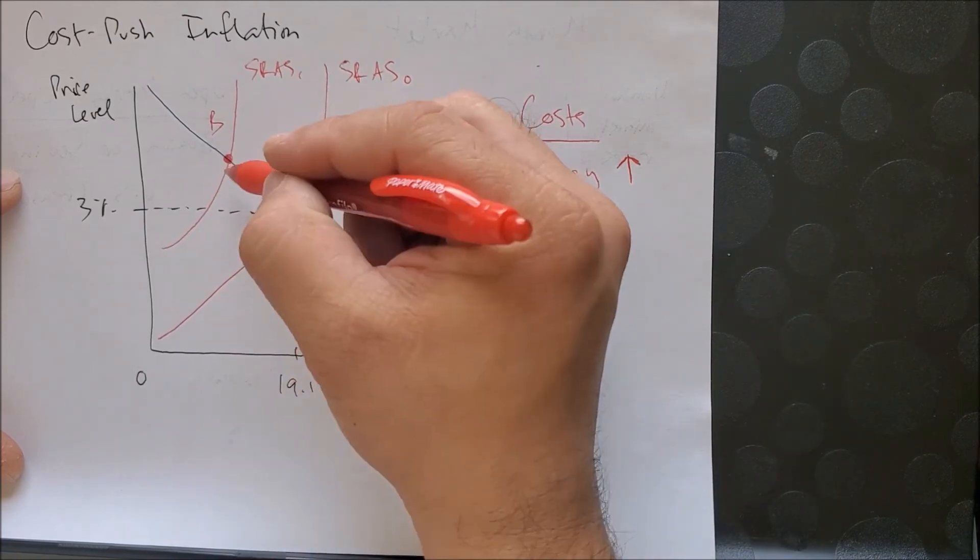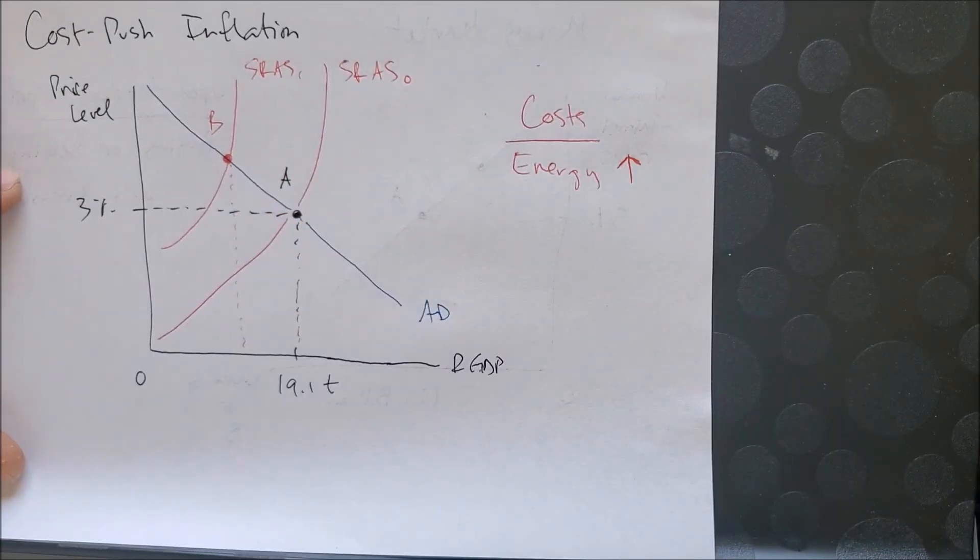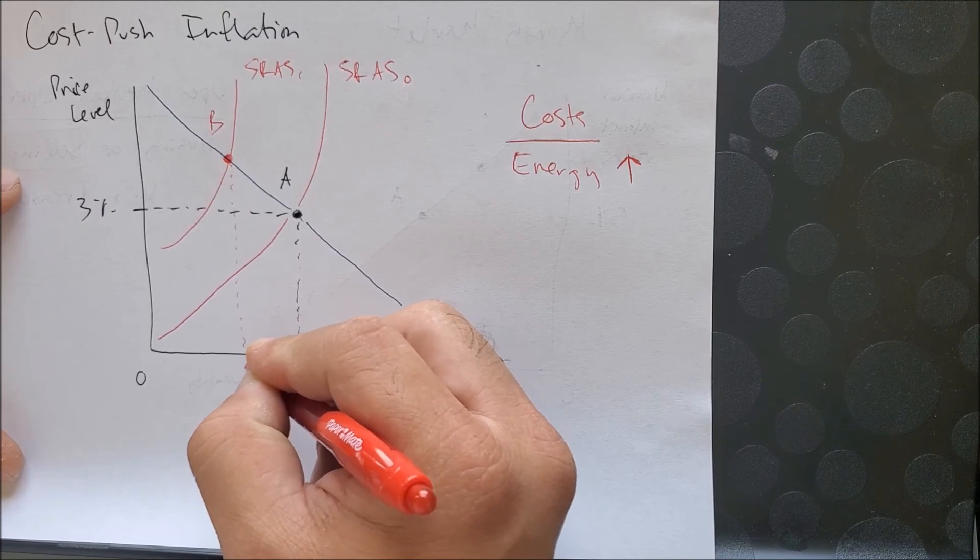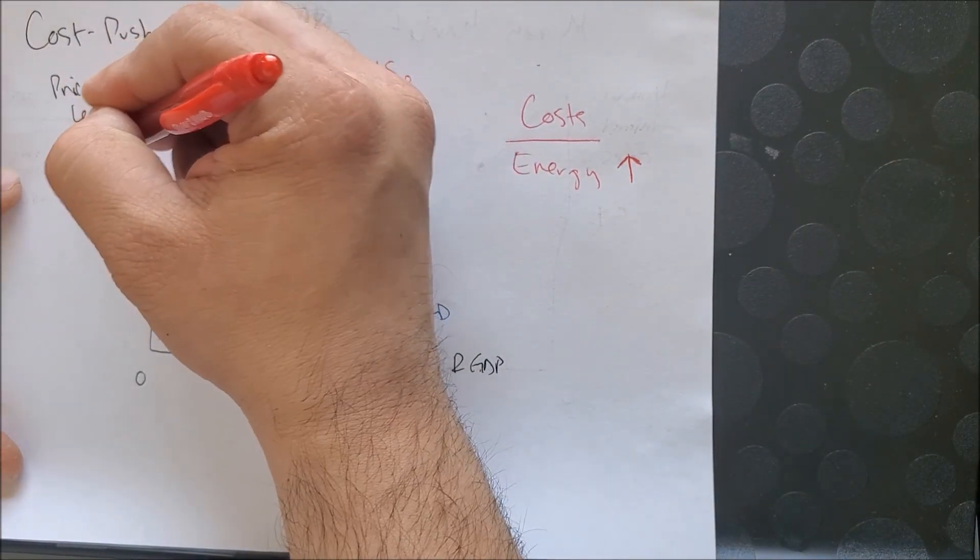At point B, looking at the x-axis, we see there is now less growth in the economy from our point A. On the y-axis, the price level has increased, maybe five percent, maybe six percent.